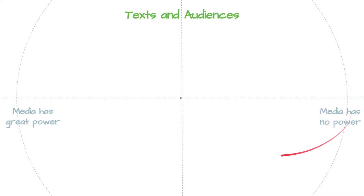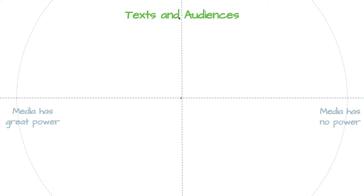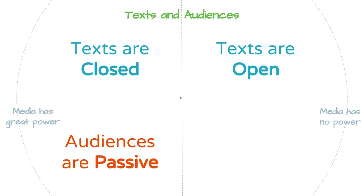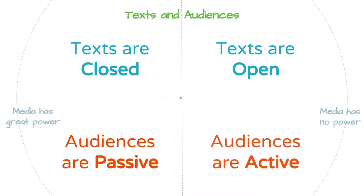When thinking about the spectrum — whether a theory lands on the side that the media has little to no power, or the side that the media has great power — we can look at it in terms of texts and audiences. On the left, where the media has great power, texts tend to be closed. On the other side, where the media has little influence, texts are considered open. Similarly, when the media has great power, audiences tend to be passive, and as audiences become more active, they empower themselves and take influence away from the media.